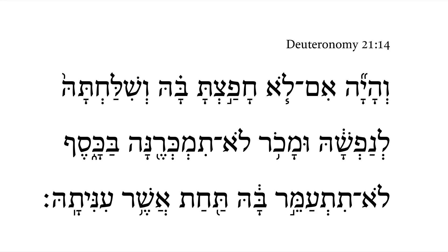Deuteronomy 21:14. In today's verse we've got a lot of verbs, so let's get rolling. We've got the beginning here as a vekatal — the verbal root is haya, as you can see there. This is just a generic 'and it shall come about.' We've got the qal stem.